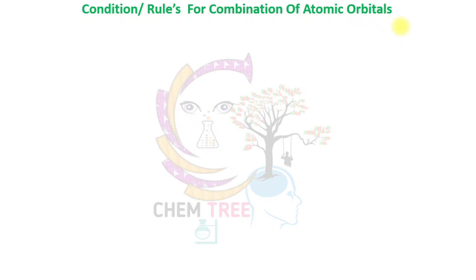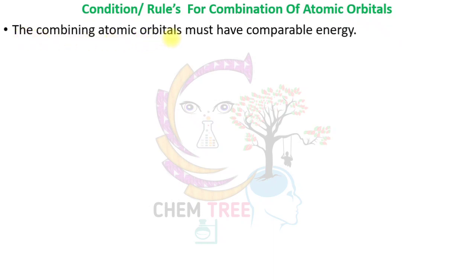Conditions or rules for combination of atomic orbitals: First, the combining atomic orbitals must have comparable energy. For example, a 1s atomic orbital can overlap with another 1s atomic orbital, but a 1s and a 2s atomic orbital cannot form a molecular orbital because they do not have comparable energy.